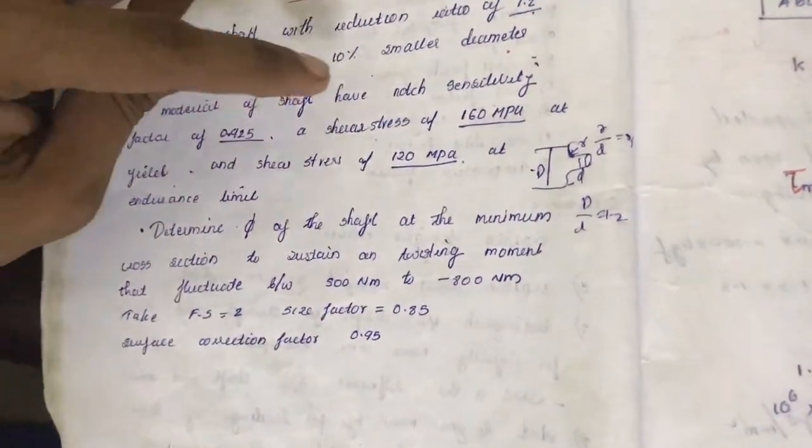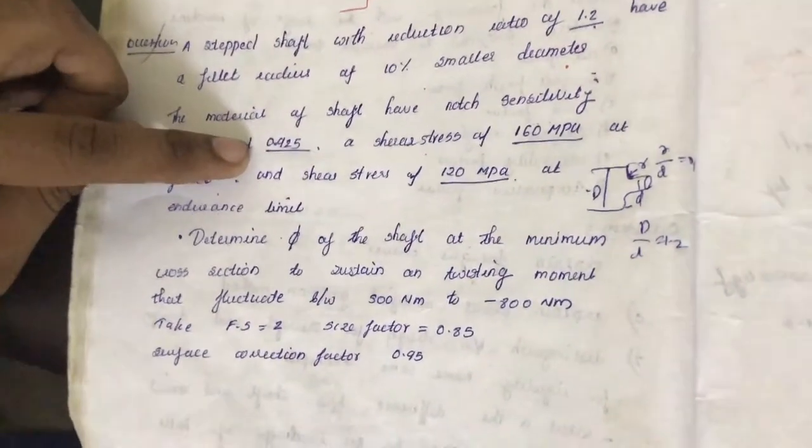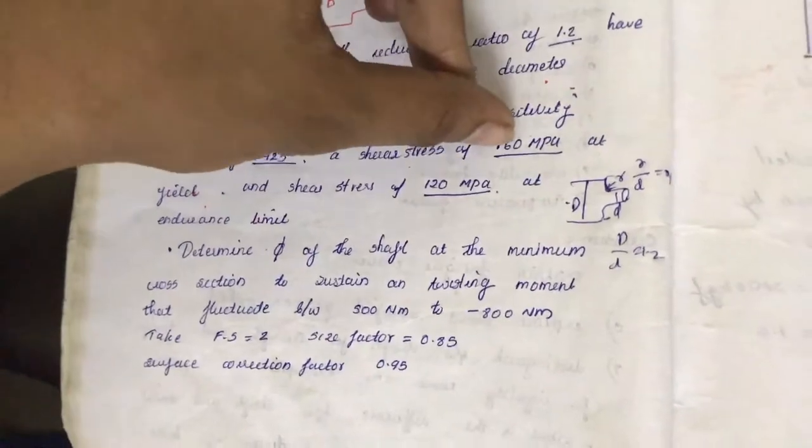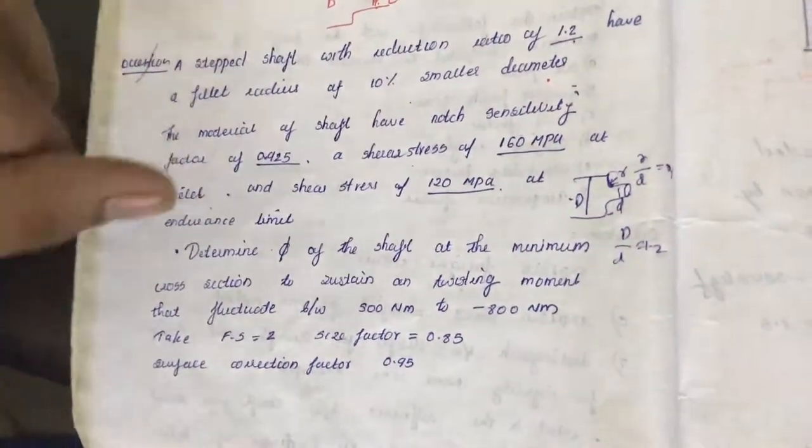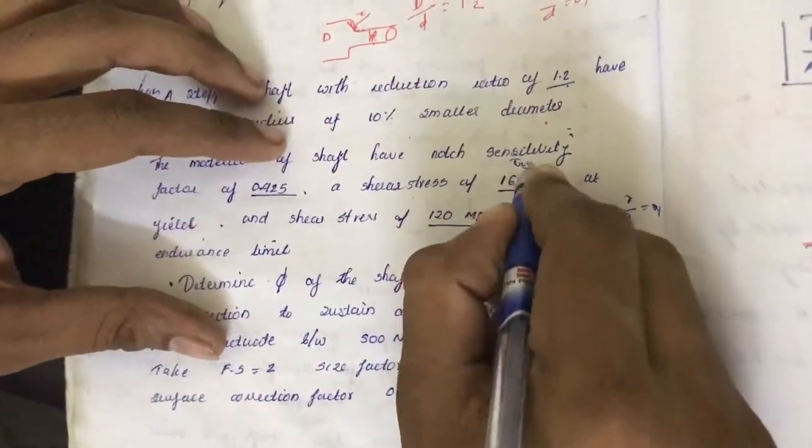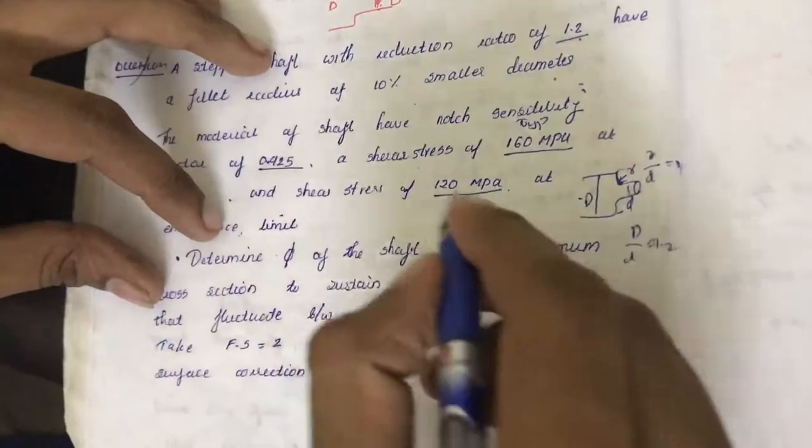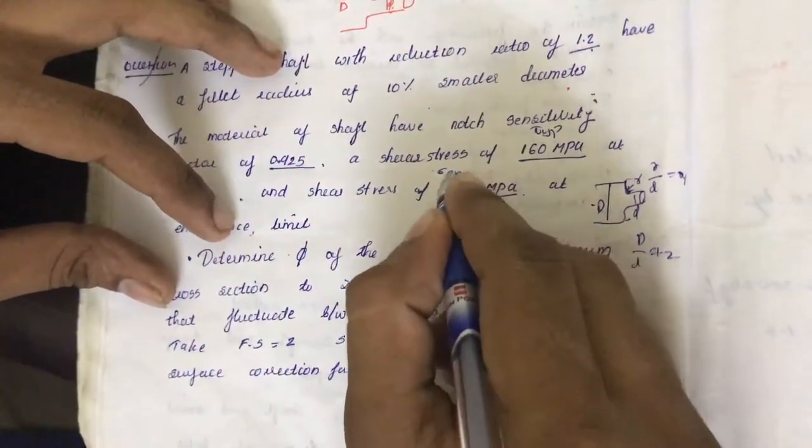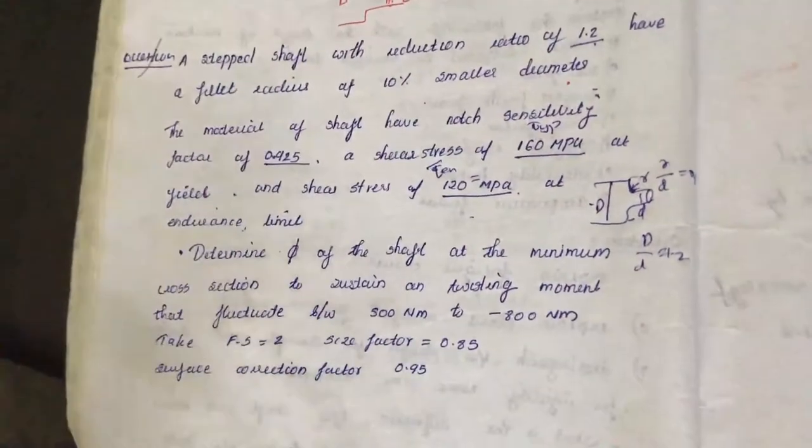Then the materials have a sensitive factor 0.95, it is q, q is equal to 0.95. Then shear stress at the yield, that is tau yp, is given. Then shear stress of 120 megapascal at endurance limit, that is at tau en, tau en is equal to 120 at endurance.